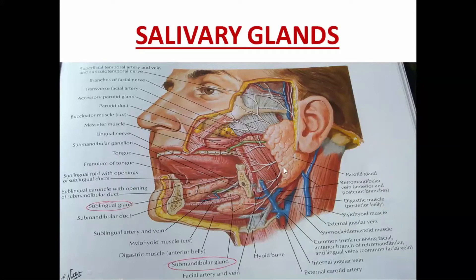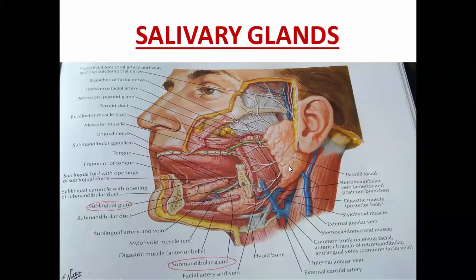Last time we studied the parotid gland. The largest salivary gland is the parotid gland. It is an inverted pyramidal or triangular shape. It lies in the parotid region, which is a fascial space forming the bed for the parotid gland. Its boundaries: below the external acoustic meatus, posterior to the ramus of mandible, anterior to the sternocleidomastoid muscle and mastoid process, and inferiorly the posterior belly of the digastric muscle.